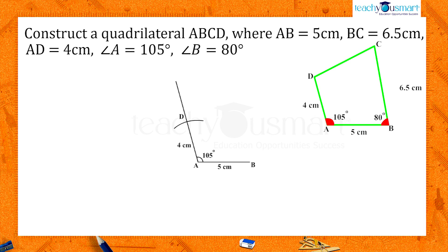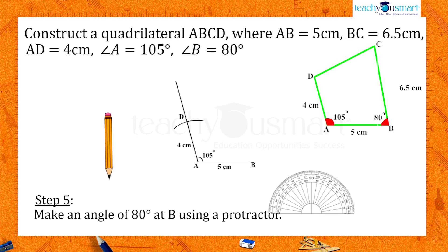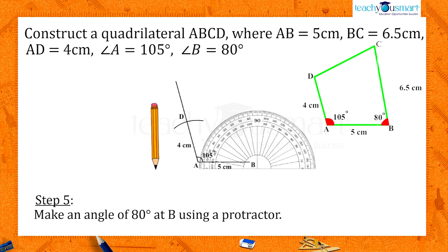Now we have to locate the point C. The point C is 6.5 centimeters away from the point B, and the line BC makes an angle of 80 degrees with the base AB. To locate it, take the protractor again and make an angle of 80 degrees at B.